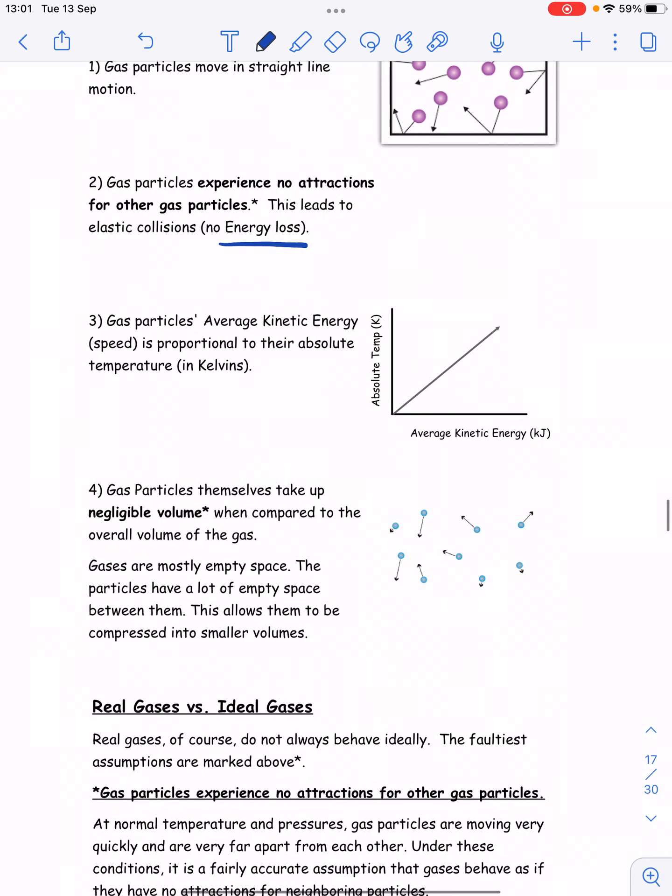We are then going to assume that gas particles' average kinetic energy is proportional to their temperature in kelvins, their absolute temperature. And we already know that. We know that temperature is a measure of average kinetic energy, especially when we have it in kelvins. Because then when we have a zero Kelvin temperature, we have zero kinetic energy.